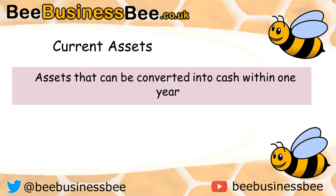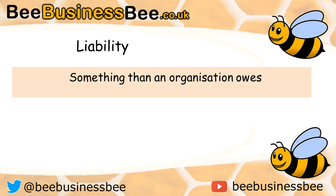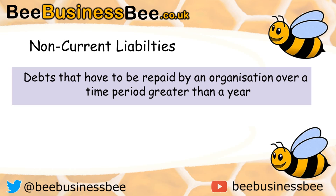We also have to categorise our assets as either current assets or non-current assets. Current assets are assets that can be converted into cash within one year, whereas a non-current asset is an asset that will take more than one year to be converted into cash. The opposite of an asset is a liability — something that an organisation owes. Current liabilities are debts that have to be repaid within one year, and non-current liabilities are debts that have to be repaid over a period longer than one year.